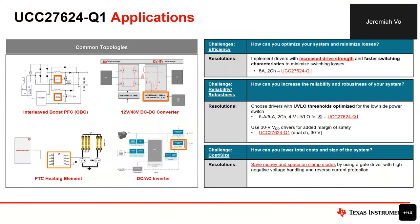Next, we have some applications. On the left, we have topologies of system applications and where you can find a low side gate driver outlined in orange. We have the interleaved boost PFC of an onboard charger — onboard charging refers to charging a battery on a hybrid or electric vehicle. We have a 12V/48V DC-to-DC converter, which steps down from 48V to 12V to power electronics in the car. Next, a PTC element — these heating elements are found in cars for defrosting, heated steering wheels, and heated seats, and typically have built-in overheating protection. Lastly, a DC-AC inverter, which converts the battery to AC current for 120V power plugs in your car.